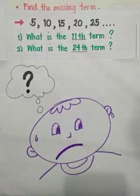I have here a simple problem. Given the sequence below, we're going to find the missing term. We have the same series of numbers: 5, 10, 15, 20, and 25. And we're going to find the 11th term and the 24th term. It seems to be a hard problem to solve, no? But I will teach you how to do it. And at the end of the lesson, I'm sure you will do it very easily and without a sweat.